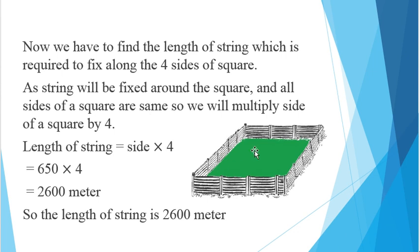Required to fix to all the four sides. For this purpose, we all know that all the sides are equal in length, so we will just multiply the side by 4. Starting from this side, I have to cover up all the four sides, so simply I will multiply one side by 4. 650 is the length of one side, and I will multiply it by 4 to measure the length of all the four sides. So, that will be equal to 2600 meter.